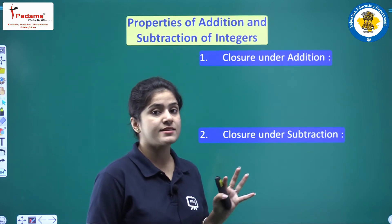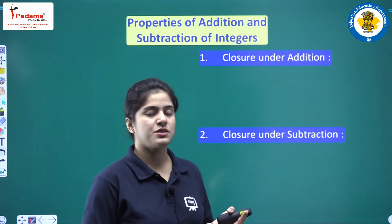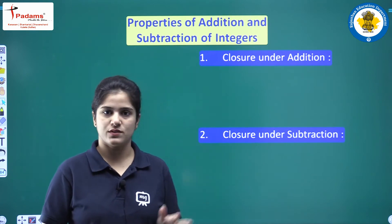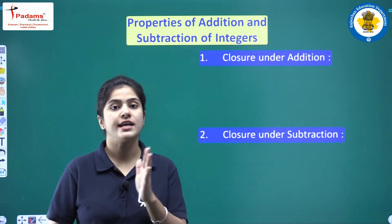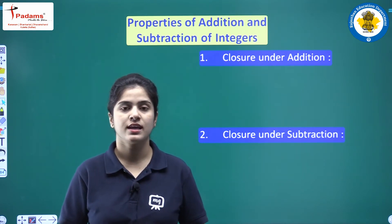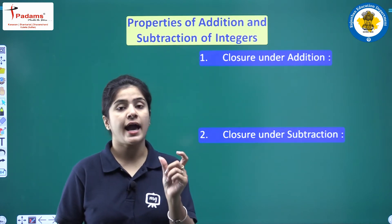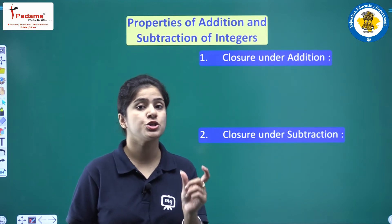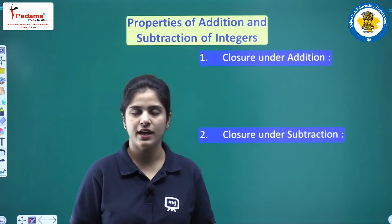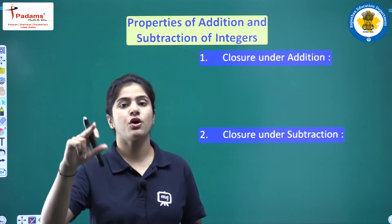The properties of addition and subtraction of integers. We are going to add or subtract integers and discuss the properties first. First property: closure under addition. It means that when you are adding two integers, the answer of the addition of these two integers should also be an integer. That is what closure under addition means.